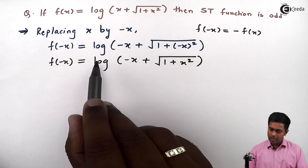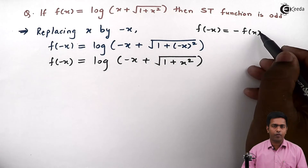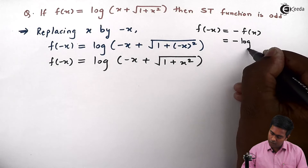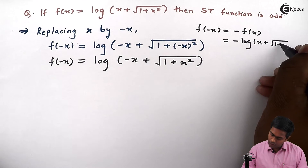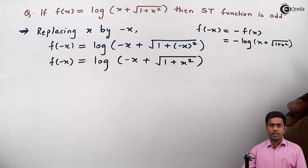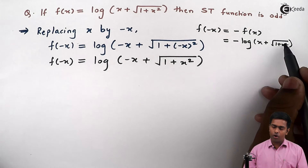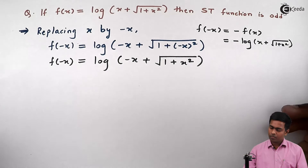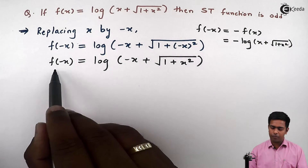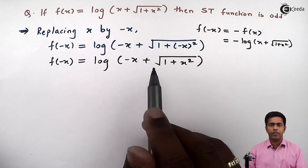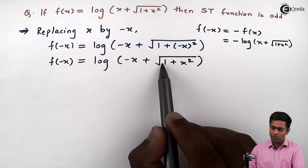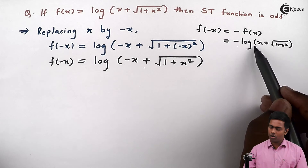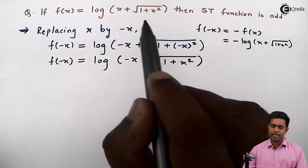But if you observe, this is not at all equal to minus f of x, because minus f of x would be minus of log of x plus root of 1 plus x square. Until we get this value for f of minus x, we cannot say that it is an odd function. So to get this value, we will perform the process of rationalization, since we can see a root here. By rationalization, we will try to bring this to the form minus of log of x plus root of 1 plus x square.